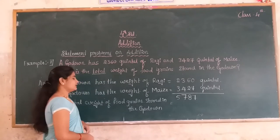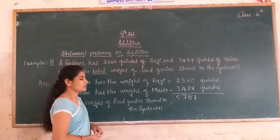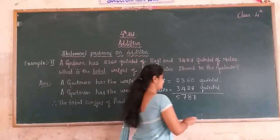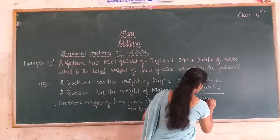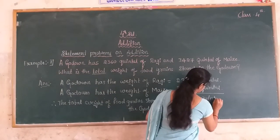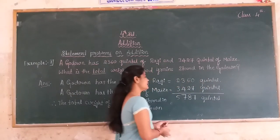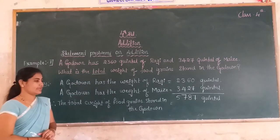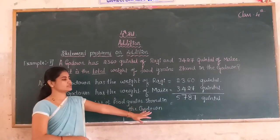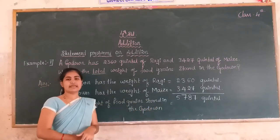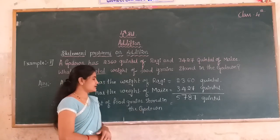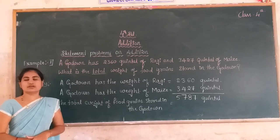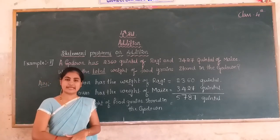What is the total weight of the food grains stored in the godown? 5,787 quintals. The total weight of the food grains is 5,787 quintals. This is the solution for the statement problem of addition.